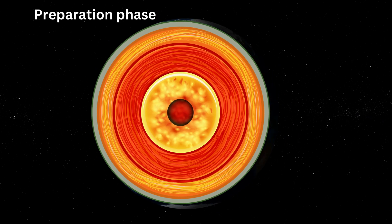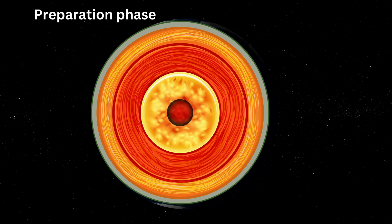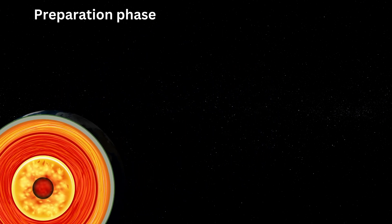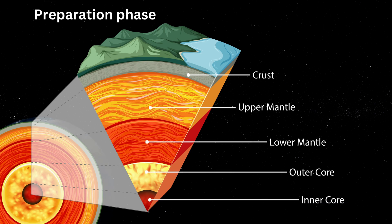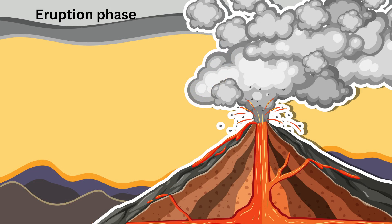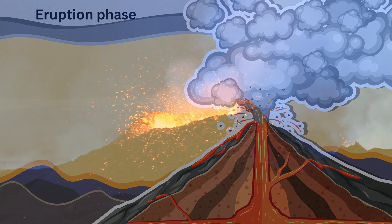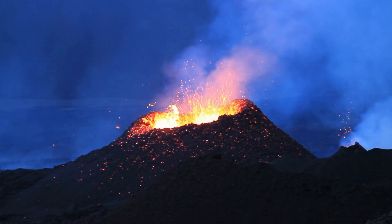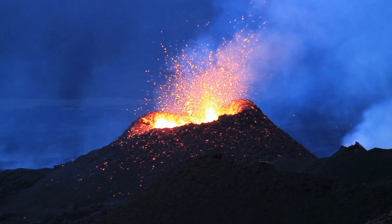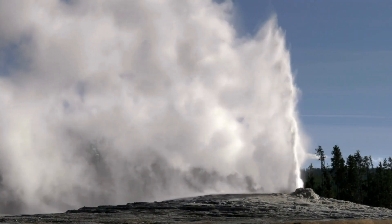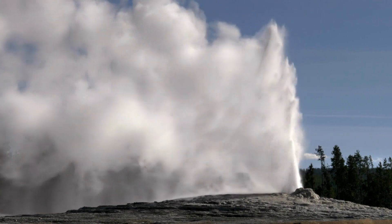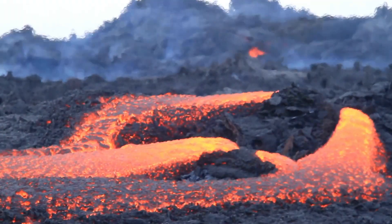The preparation phase begins when magma rises from the Earth's mantle to the crust. As the magma rises, it cools and becomes more viscous. The eruption phase occurs when the magma reaches the surface and erupts. The eruption can be explosive or effusive — explosive eruptions produce large amounts of ash and gas, while effusive eruptions produce lava flows.